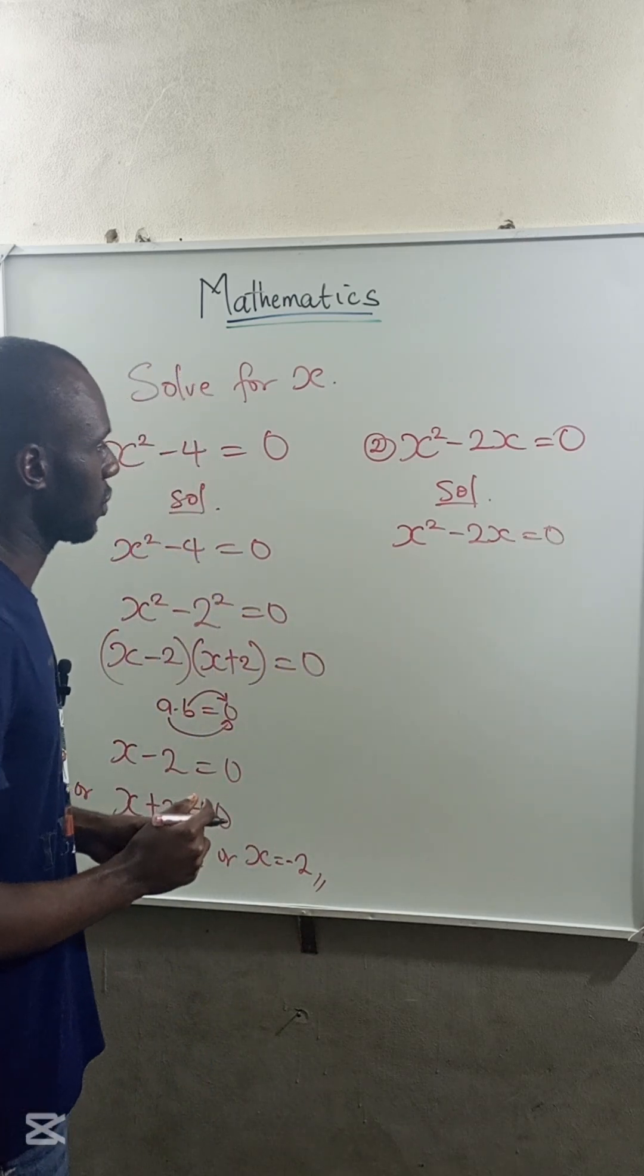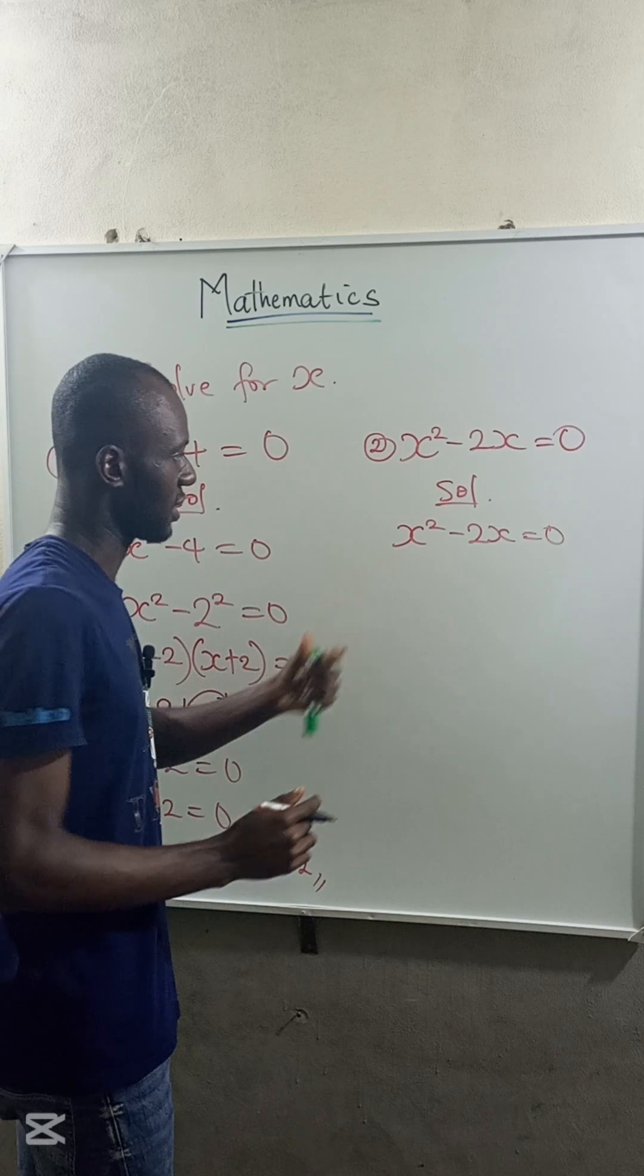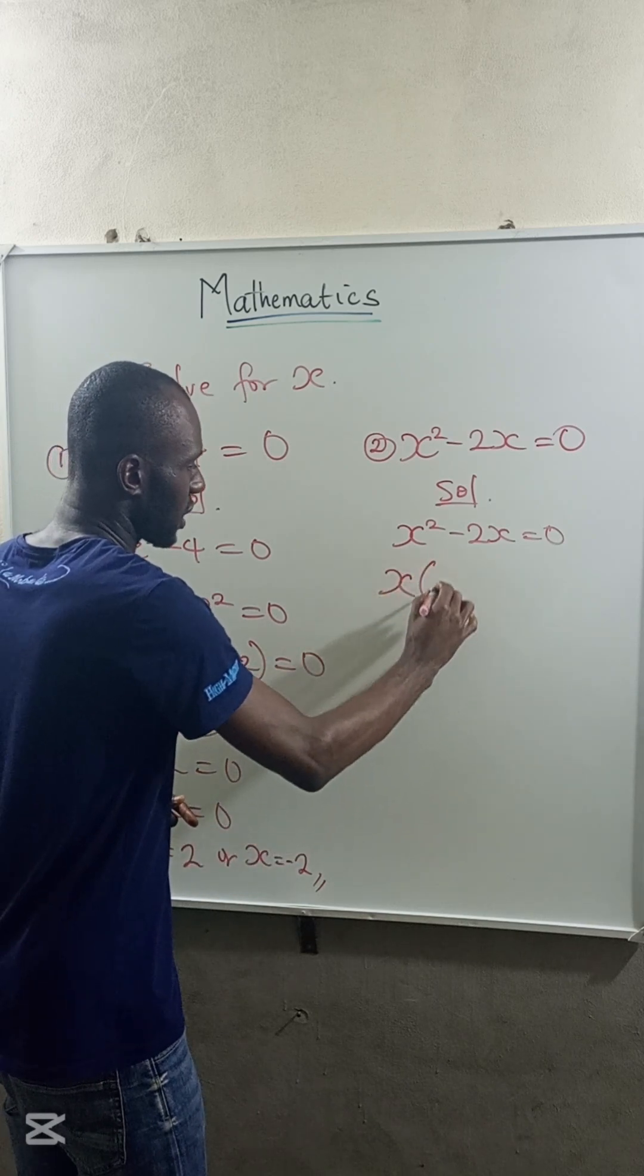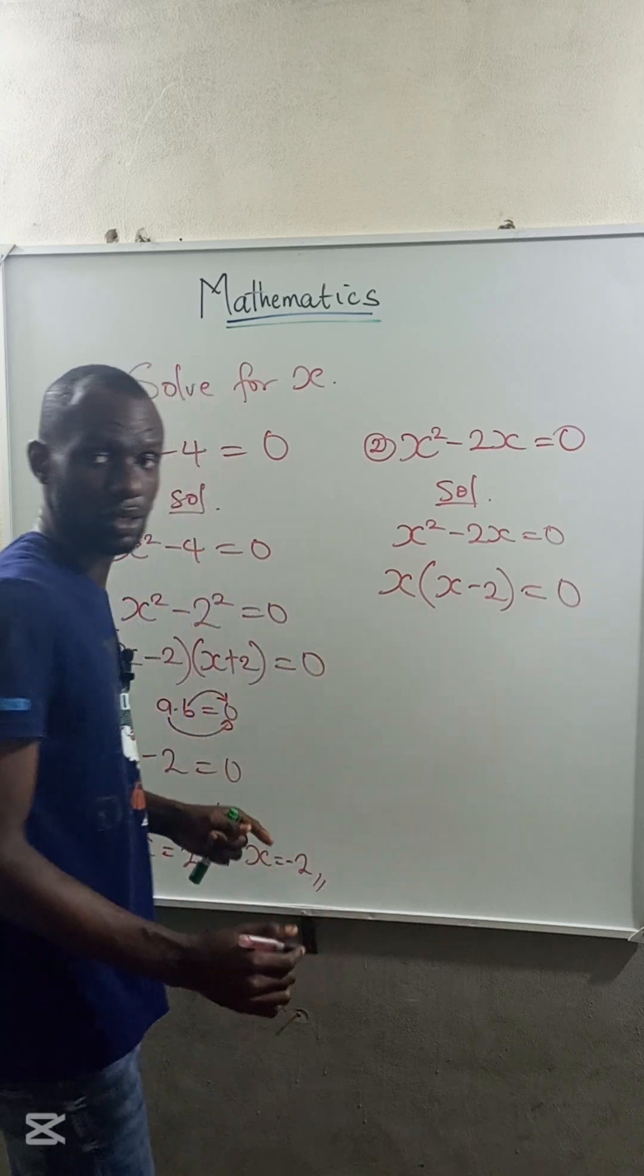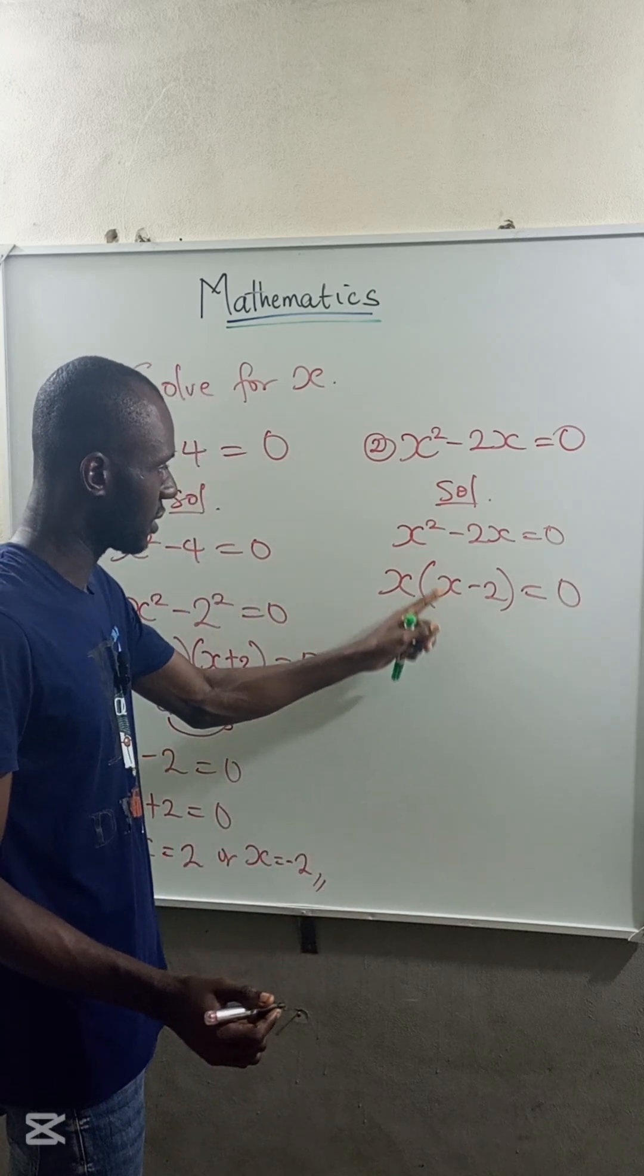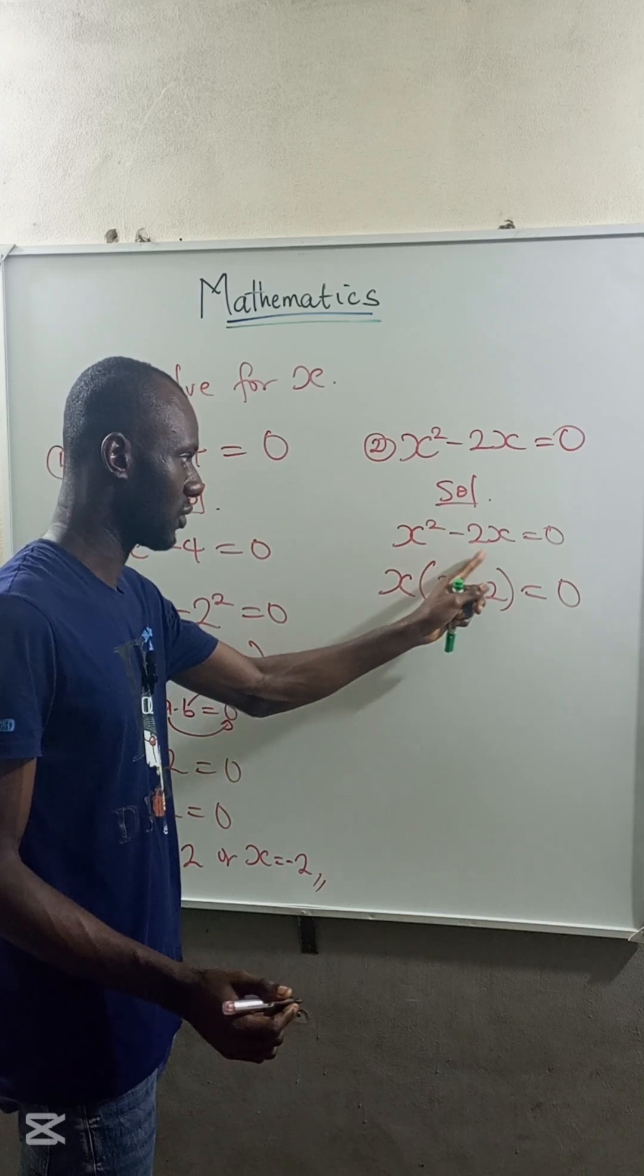So we have to factorize x from the left-hand side. So this becomes x, open bracket, x minus 2 is equal to 0. This is because x times x is x squared. x times negative 2 is negative 2x.